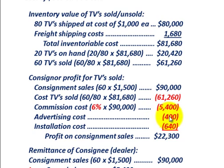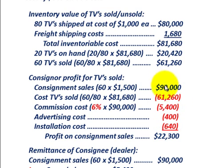The advertising costs of $400 and the installation costs of $640 also have to be subtracted. Subtracting all our costs from our sales of $90,000, we end up with a profit on the consignment sales of $22,300.